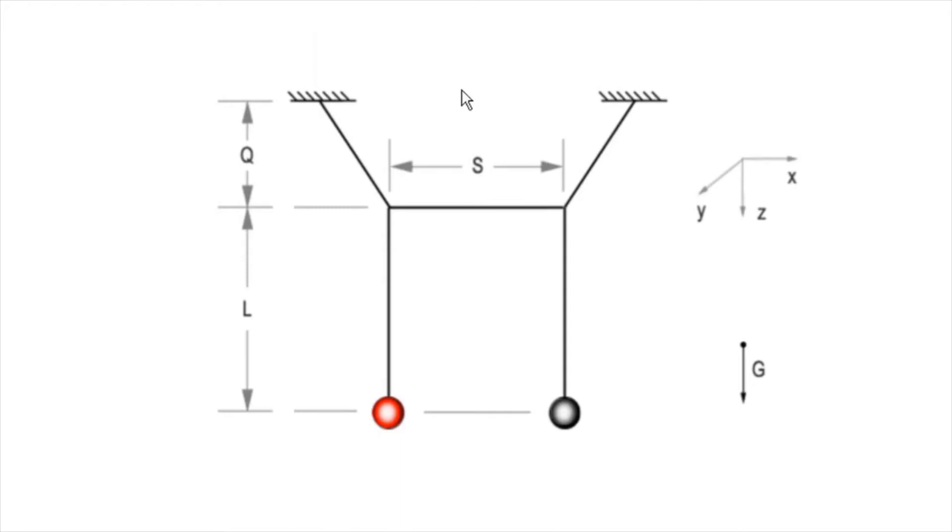A horizontal segment, H, specifies the distance between the pendulum's support points. Another horizontal segment, S, is the length of the span where the pendula are joined. A vertical segment, Q, is the distance from the supports down to the span. A vertical segment, L, is the distance from the span down to the pendulum weights.